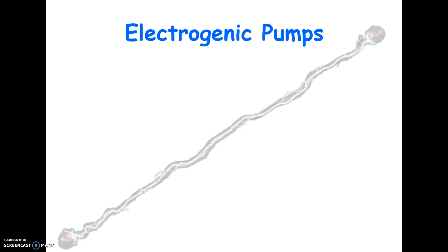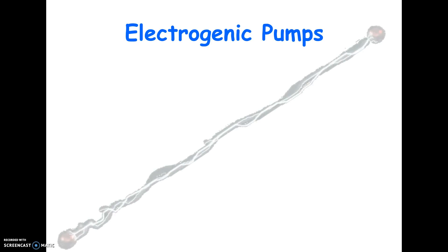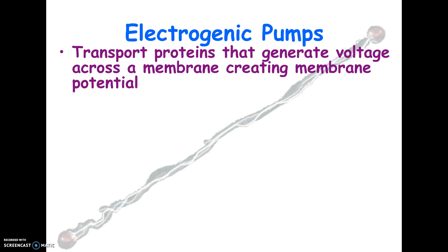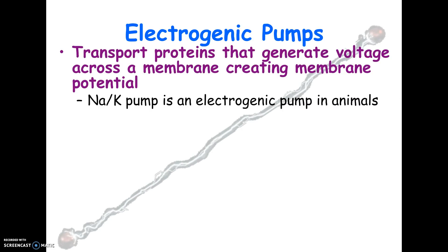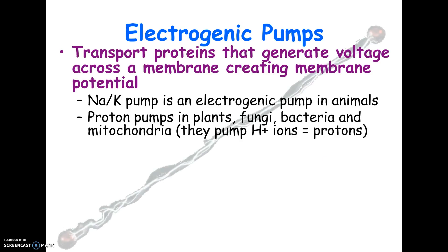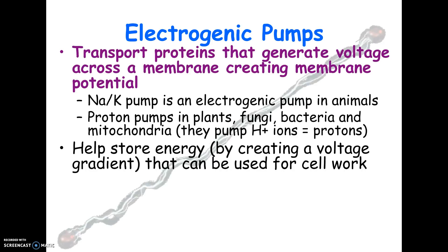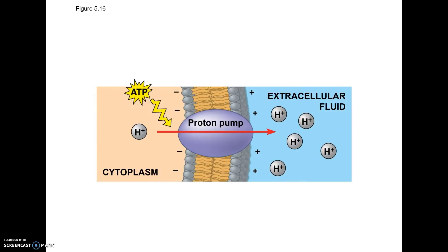The electrochemical gradient will make more sense when we talk about the nervous system and also cell respiration and the mitochondria — for now it's really a definition. Electrogenic pumps are any proteins that create this electrochemical gradient; the sodium-potassium pump is an example. In plants, fungi, bacteria, and also mitochondria, we have proton pumps that carry hydrogen ions through a cell, requiring energy. The gradient creates a stored energy that can be used later.